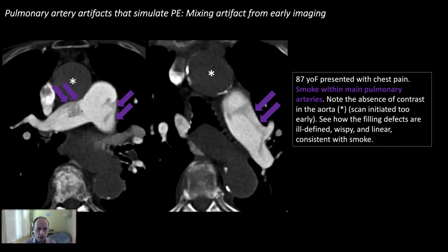Here is another example where there's mixing in the main pulmonary artery. This patient clearly has heart failure and pulmonary hypertension, so the pulmonary arteries are enlarged. There is no contrast in the aorta and we have wispy ill-defined filling defects in the main right and left pulmonary arteries — this is just mixing artifact, not pulmonary embolism.